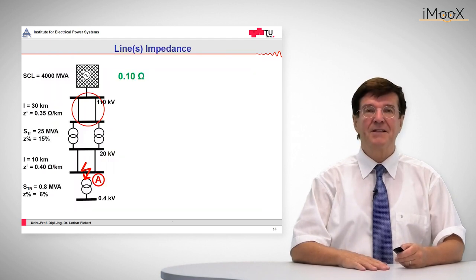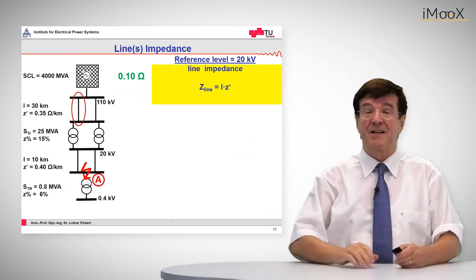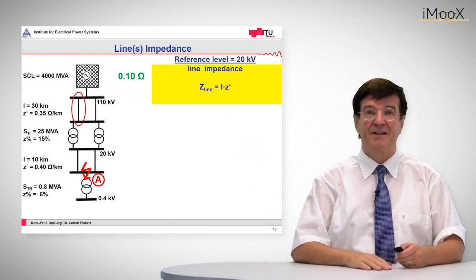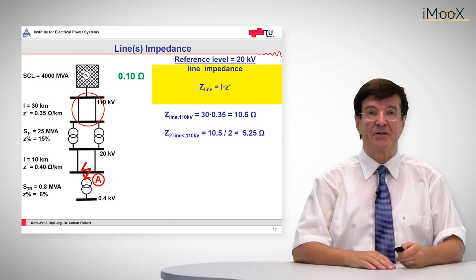The line impedance, as we can see here to our right side, is given by the specific line impedance multiplied by the length, and in this case it is 10.5 ohms for one line and half of that for two lines in parallel.